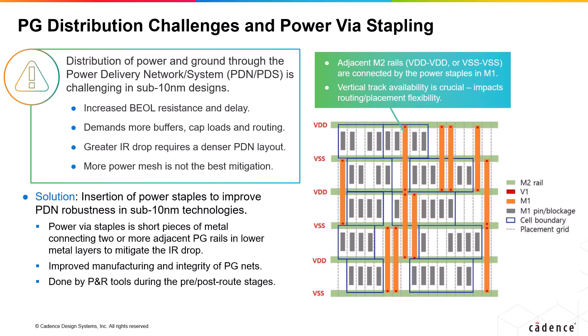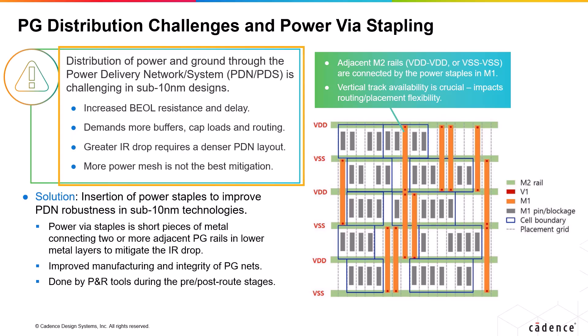What is VIA stapling, or power stapling, in two-dimensional designs? Distribution of power and ground through the power delivery network is extremely challenging in modern VLSI design. Back end-of-line resistance increases dramatically in sub-10 nanometer VLSI, which increases delay and requires additional buffers to meet timing requirements.